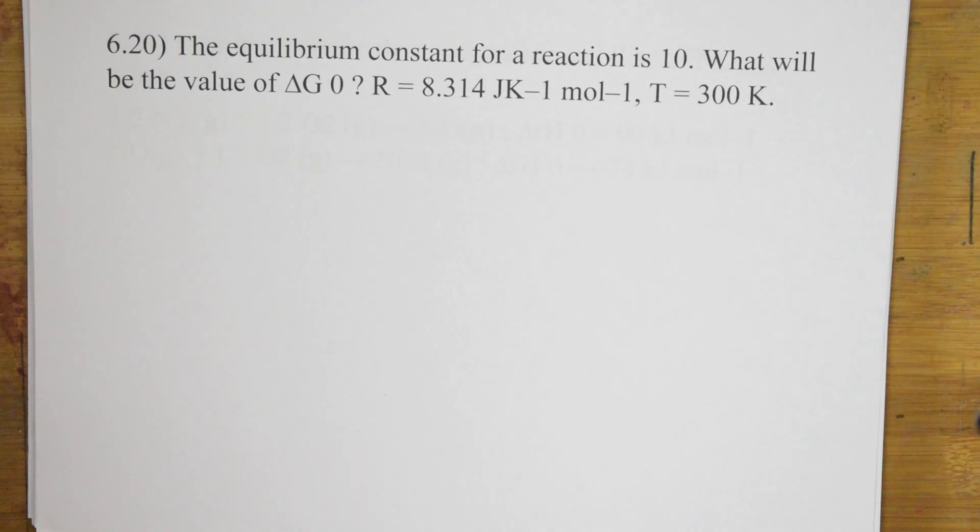Let us come back and solve question number 20 of your NCERT. So here in this question, let us read the question first. What did they give us? They have given us the equilibrium constant for a reaction. Now, the reaction is 10. What will be the value of delta G naught and R value is given, T value is also given.